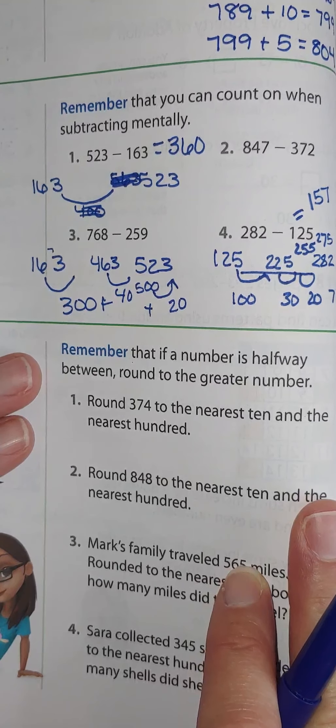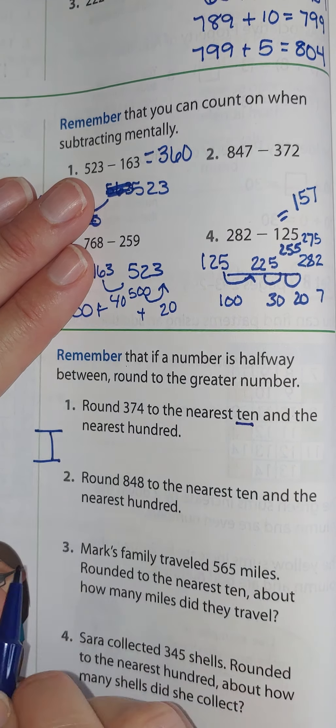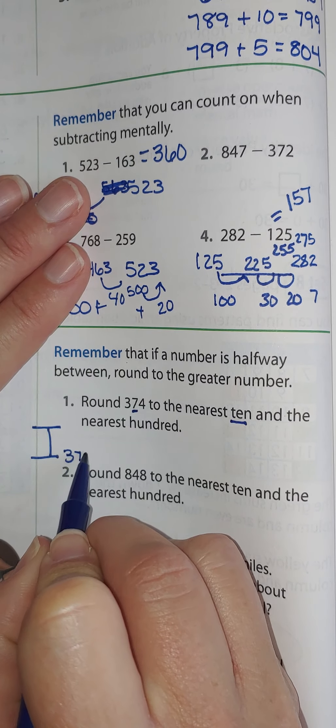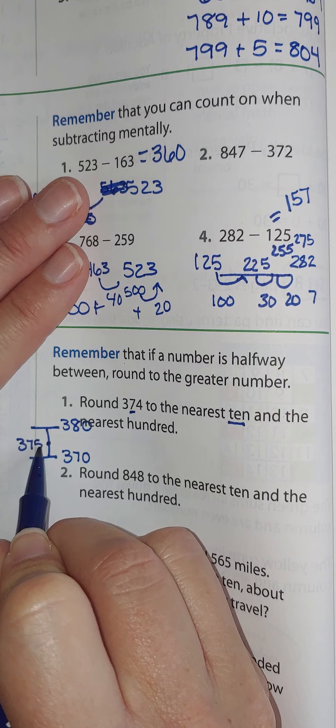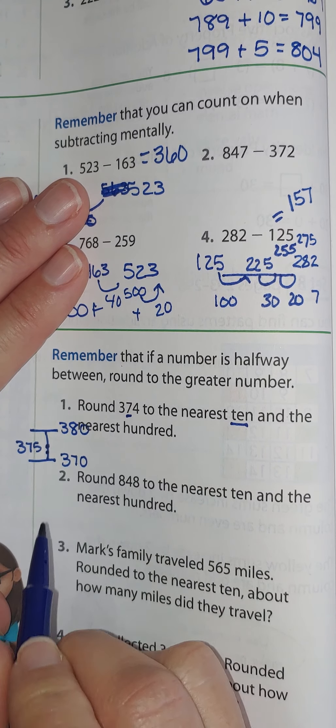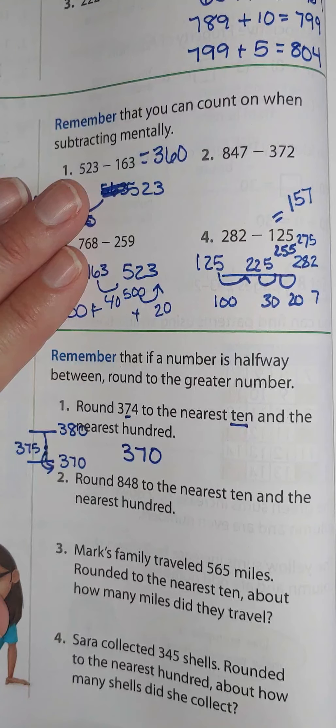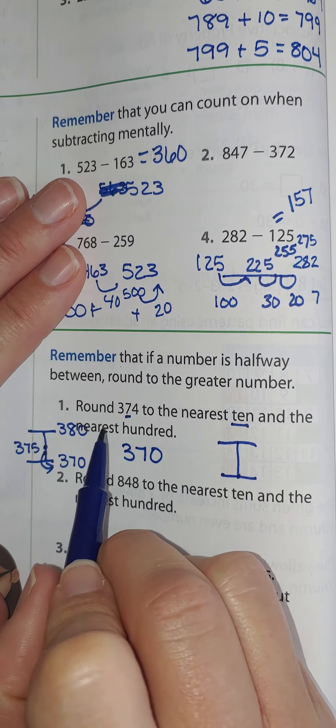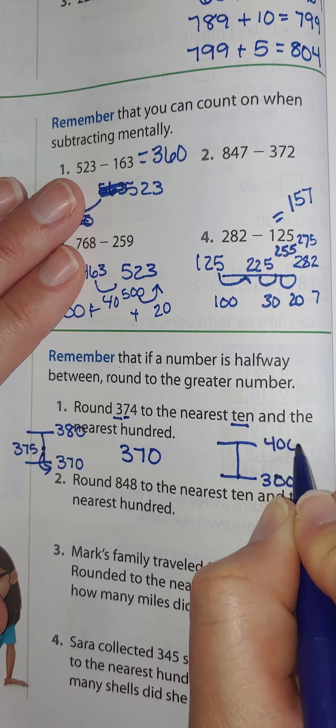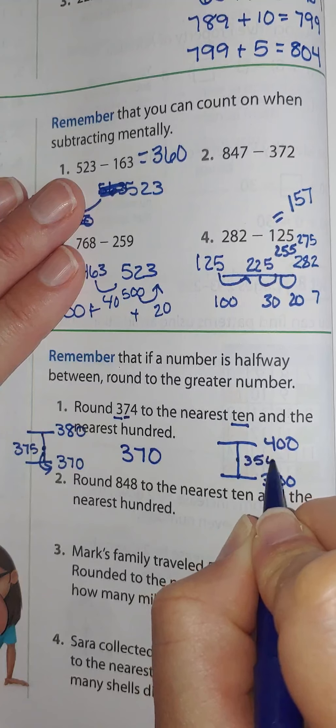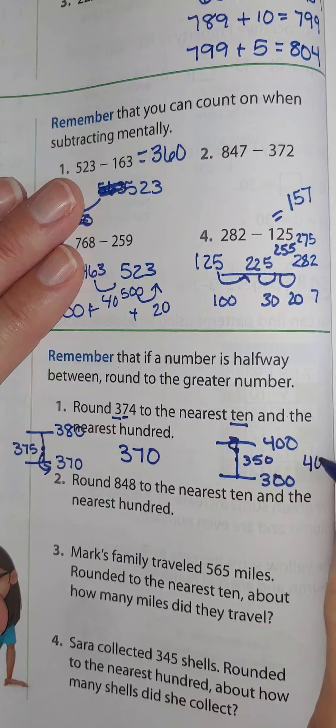You might need to get another piece of notebook paper in order to do this. I'm going to make my vertical number line. And I'm going to go to the tens place first, which is the 70. So I'm going to go from 370 to 380. My halfway point, which is 375. I put where 374 is. It's closer to this. So that means it would be rounded to 370. Then let's do the same thing for our hundreds. I'm going to round to the hundreds. So I have 300 and 400. Halfway is 350. So where does 374 fall? Somewhere here. That means we would go up. So it would be 400.